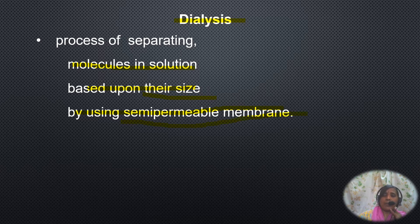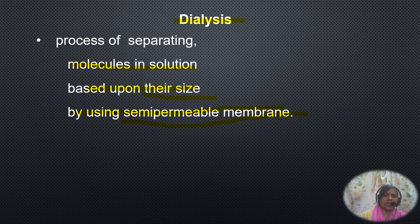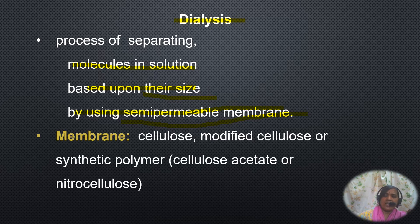What is a semi-permeable membrane? A semi-permeable membrane refers to a membrane which is selectively permeable — which means it allows only certain molecules to pass through it and does not allow all molecules to pass through. The membranes generally used are cellulose or modified cellulose, or sometimes synthetic polymers such as cellulose acetate or nitrocellulose membranes.